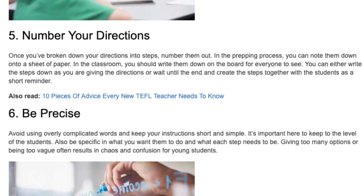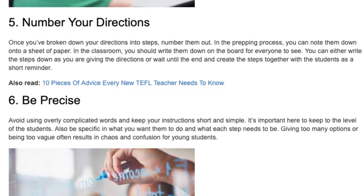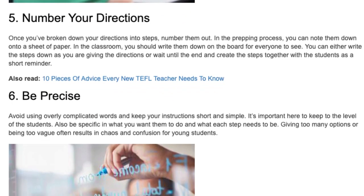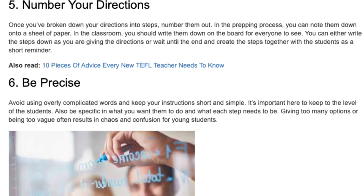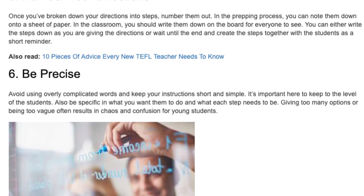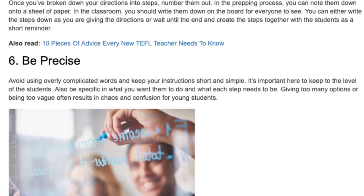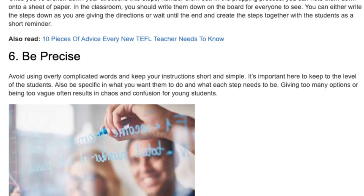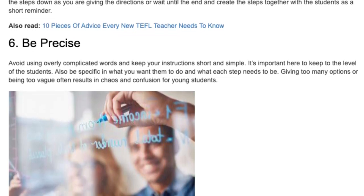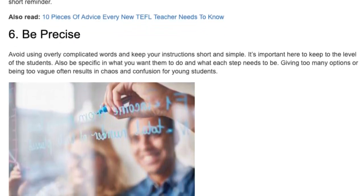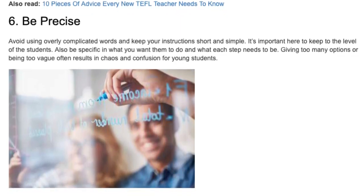Tip 6: Be precise. Avoid using overly complicated words and keep your instructions short and simple. It's important here to keep to the level of the students. Also be specific in what you want them to do and what each step needs to be. Giving too many options or being too vague often results in chaos and confusion for young students.